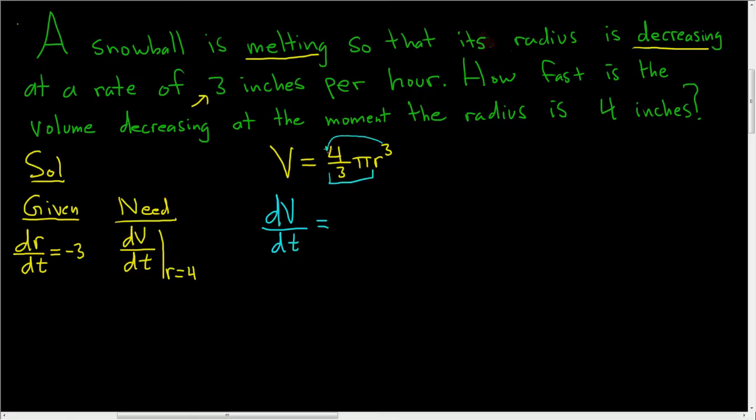You just bring the 3 down, so you get 3 times 4 thirds pi r squared times the derivative of the inside via the chain rule, dr/dt. Now r is a function of time, so we have to multiply by the derivative of the inside function.